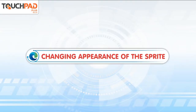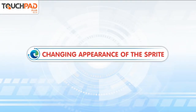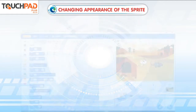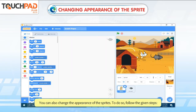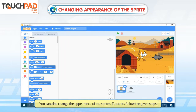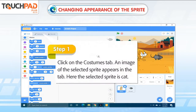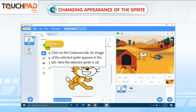Changing Appearance of the Sprite. You can also change the appearance of the Sprites. To do so, follow the given steps. Step 1: Click on the Costumes tab. An image of the selected Sprite appears in the tab.